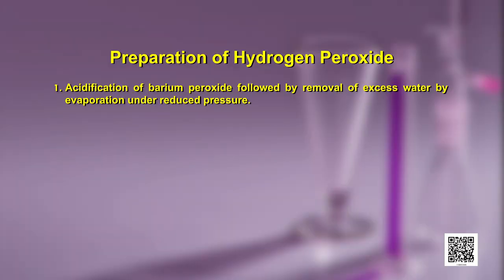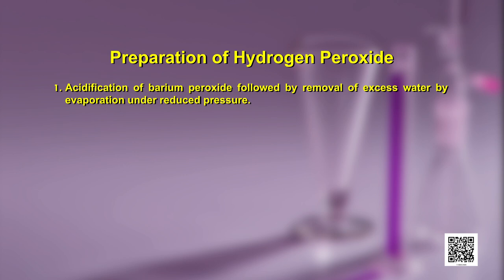The first method is acidification of barium peroxide followed by removal of excess water by evaporation under reduced pressure. This has been shown by the chemical equation here. You can see that hydrogen peroxide has formed by barium peroxide.